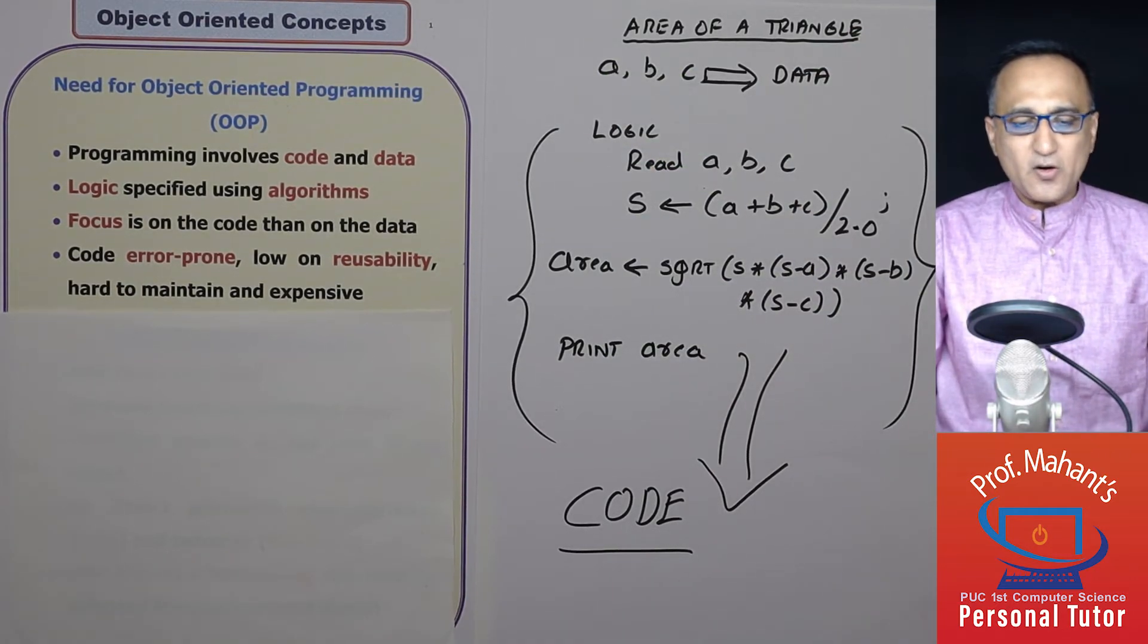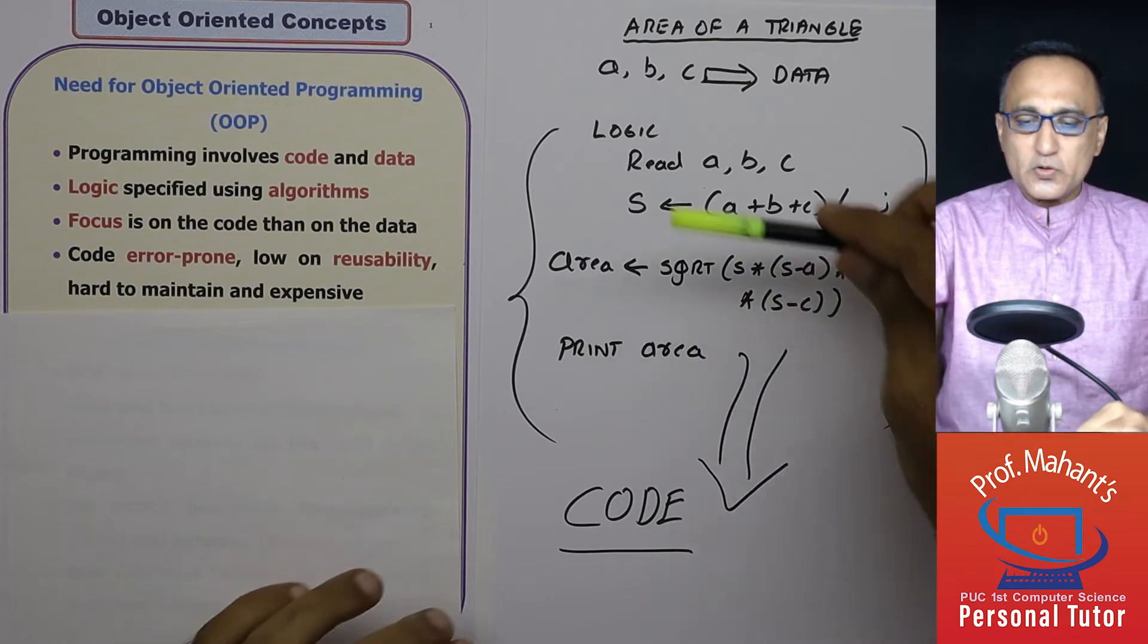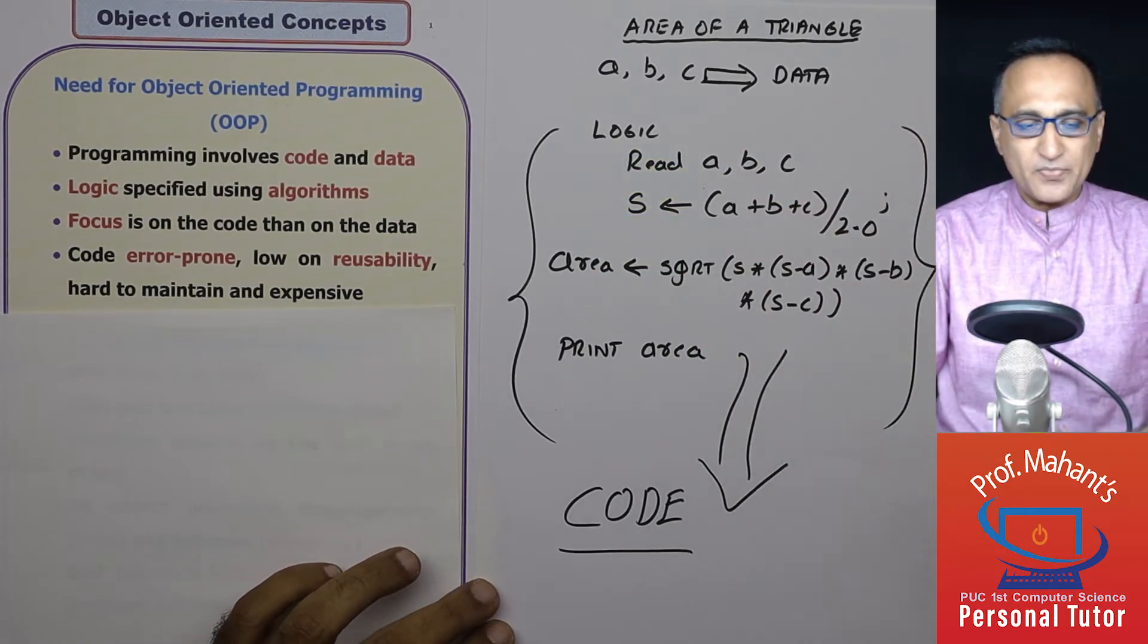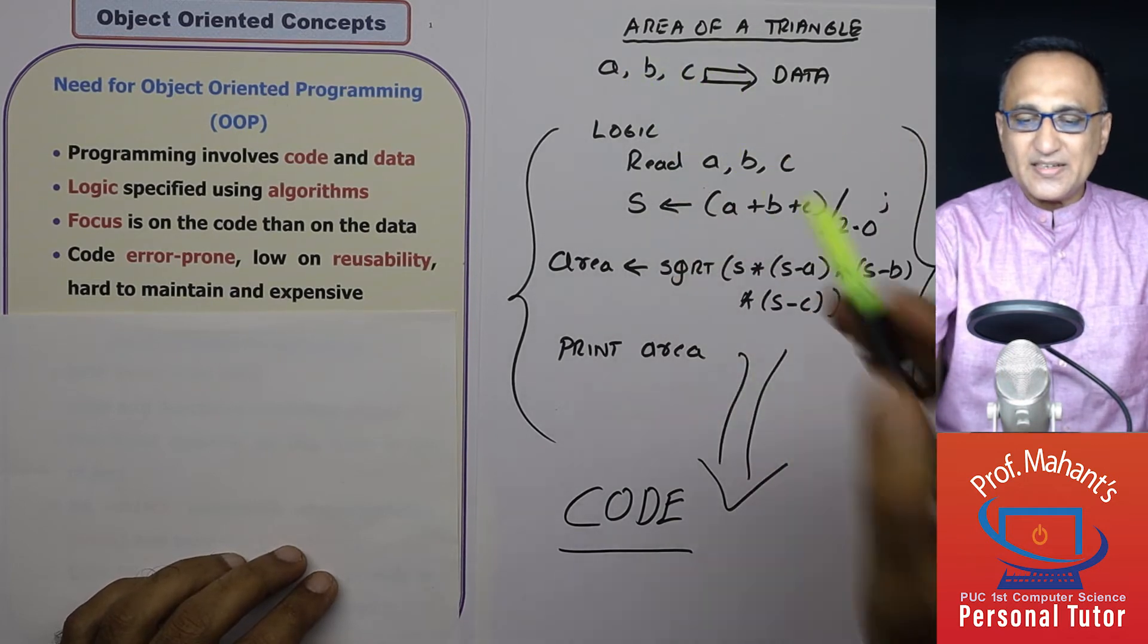So all these steps represent the algorithm or logic, ABC represents the data. But when we were writing code, our focus was mostly on the logic of the code. It was very little on the data.